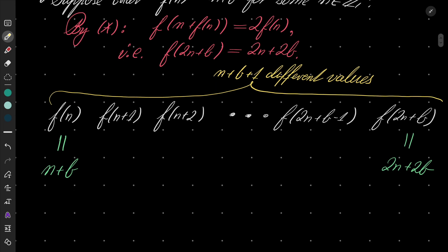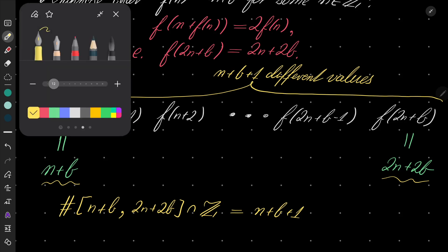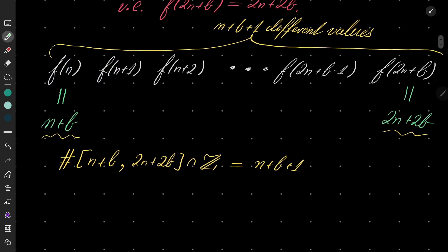But let's also notice that the cardinality of [n+b, 2n+2b] intersected with integers is also n+b+1. So since our function is strictly increasing, there is only one possibility. We must have consecutive numbers going from n+b up to 2n+2b.